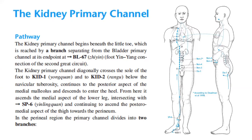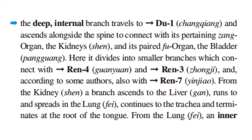In the perineum region, the primary channel divides into two branches. The first branch, the deep internal branch, travels to Du 1 and ascends alongside the spine to connect with the pertaining zhang organ, the kidneys, and its paired fu organ, the bladder. Here it divides into smaller branches which connect with REN 4 and REN 3, and according to some authors, also with REN 7.